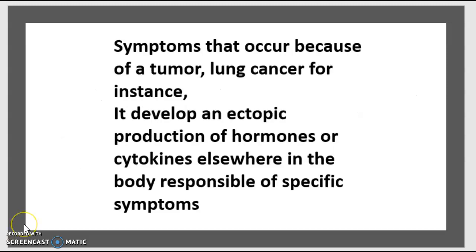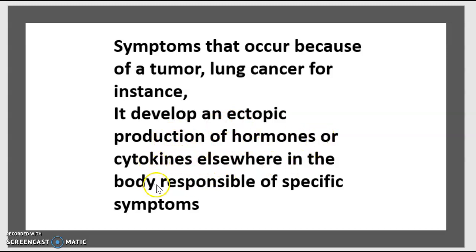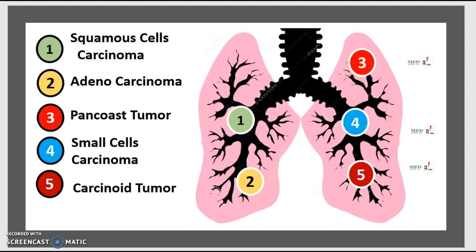What is paraneoplastic lung syndrome? It refers to symptoms that occur because a tumor — lung cancer, for instance — has developed an ectopic production of a hormone or cytokine elsewhere in the body, responsible for specific symptoms. There are five categories.